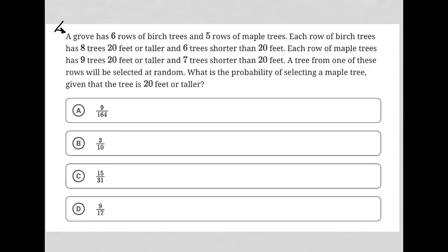This question says a grove has six rows of birch trees — so B has six rows — and five rows of maple trees, so M has five rows. Each row of birch trees has eight trees 20 feet or taller and six trees shorter than 20 feet.